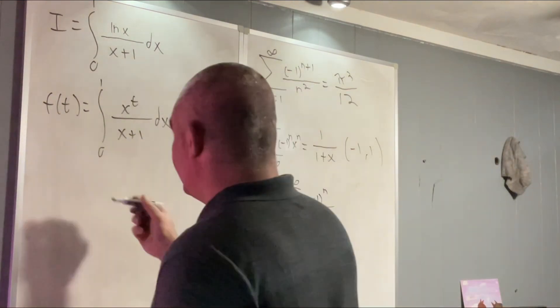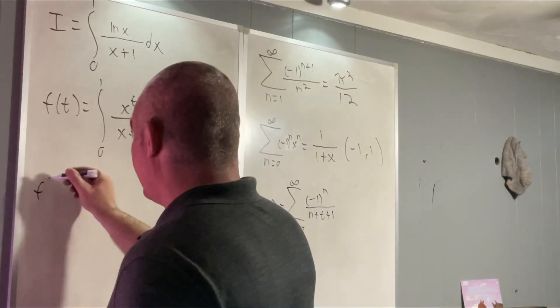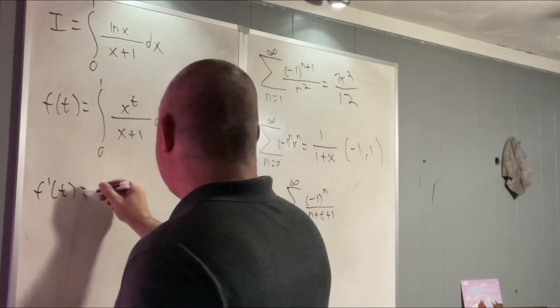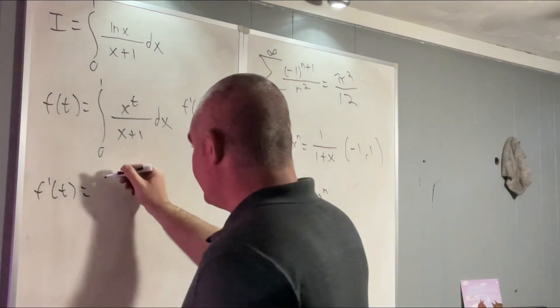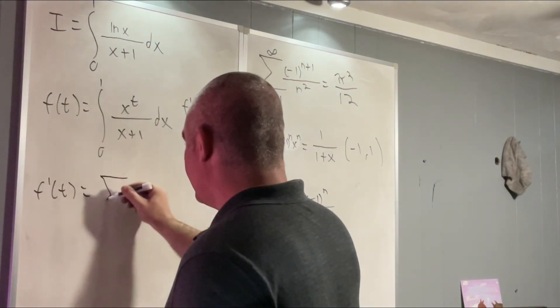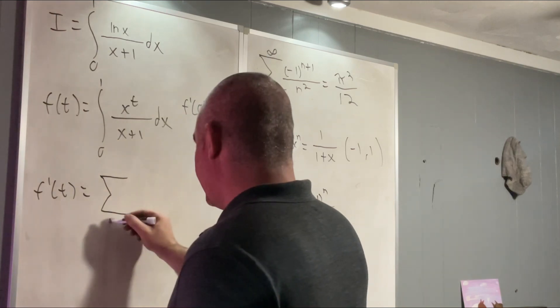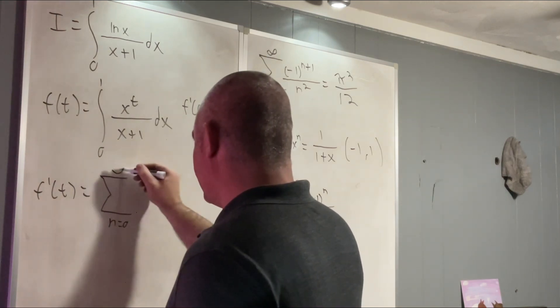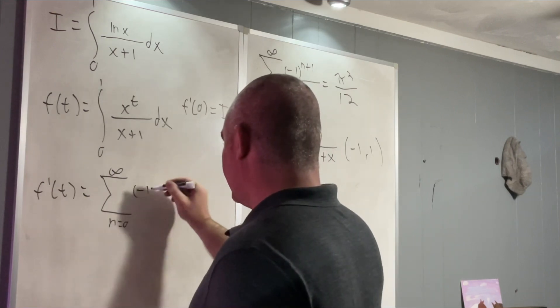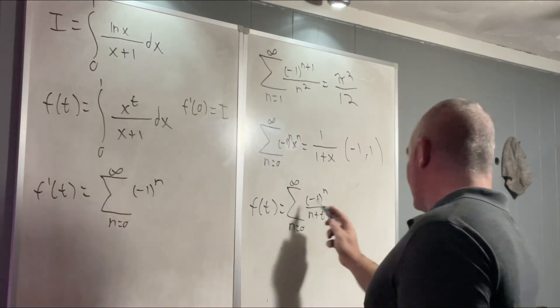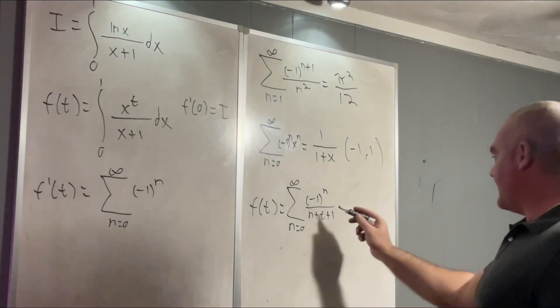All right. That means that our f prime of t is equal to the derivative of this thing with respect to t. That's going to be the sum from n equals 0 to infinity. Let's see. We're still going to have the negative 1 to the n. But this,